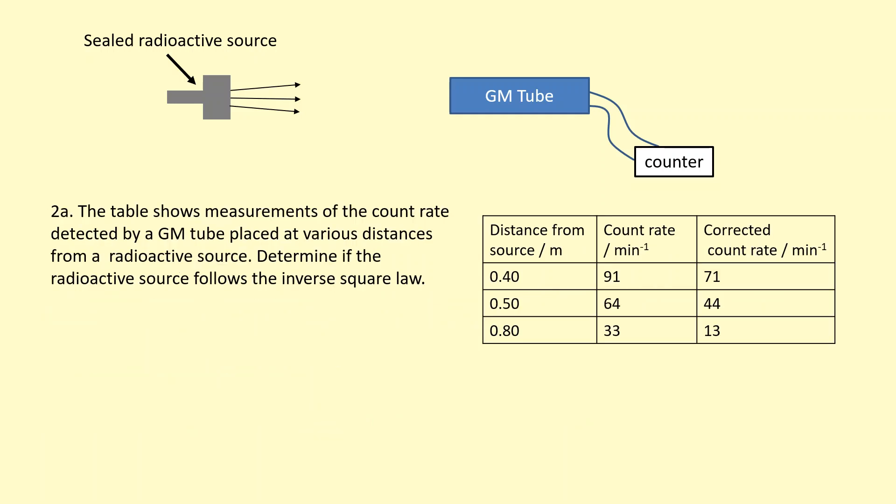In this question, the table shows the measurement of the count rate detected by a GM tube placed at various distances from a radioactive source. Determine if the radioactive source follows the inverse square law. We've got the corrected count rate already. The inverse square law is written here.